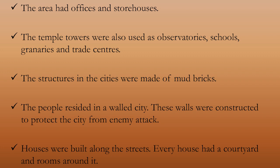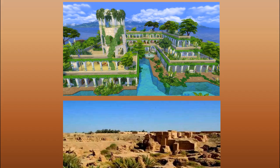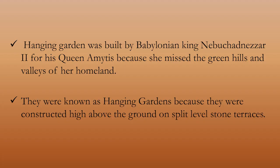Another important architectural structure during the Mesopotamian civilization is the Hanging Gardens of Babylon. The Hanging Gardens were built by Babylonian King Nebuchadnezzar II for his queen Amytis, as she missed her homeland, its green hills and valleys. The garden was built above the ground on split-level stone terraces — like a terrace garden.